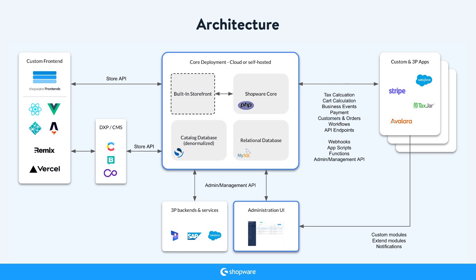Let's have a look at Shopware's system architecture. In it, you can see the core deployment, which is the heart of the system. It contains business logic and all application interfaces. The core is the only component that is mandatory for a Shopware installation. It is connected to the database and the Elasticsearch cluster, which contains a denormalized representation of the product catalog used for searching. From its central location in the stack, the core can communicate with the other components by means of several public API endpoints.